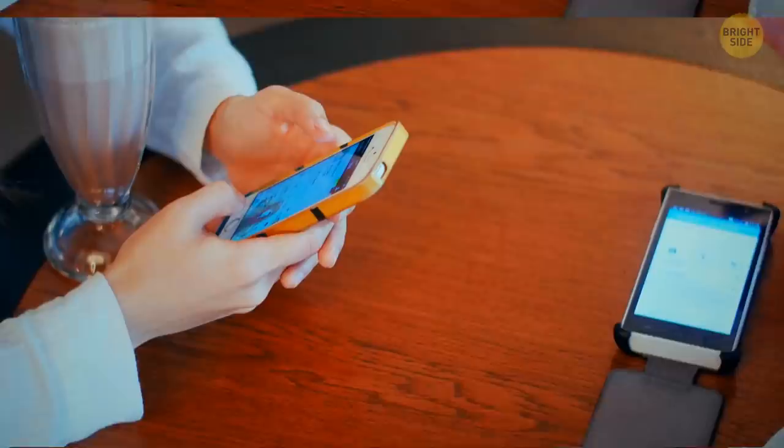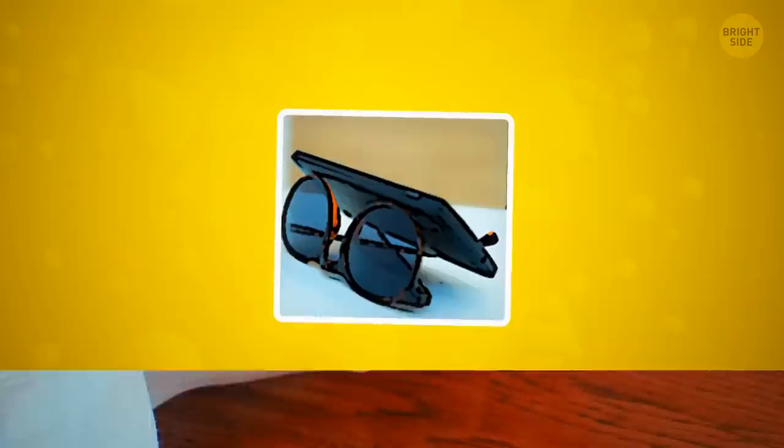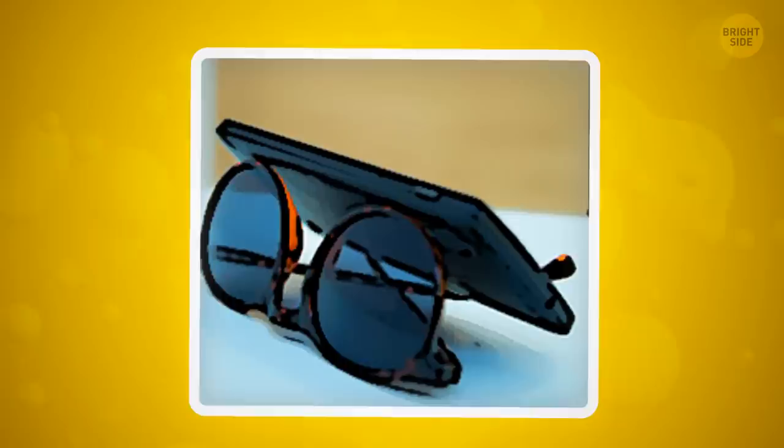If you're using your phone to watch something and are tired of propping it up and having it fall back down, try using your sunglasses. Simply place them upside down and use the parts that go around your ears to hold the phone in place.